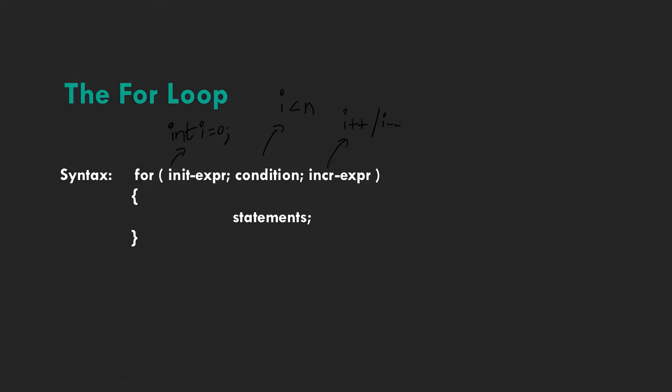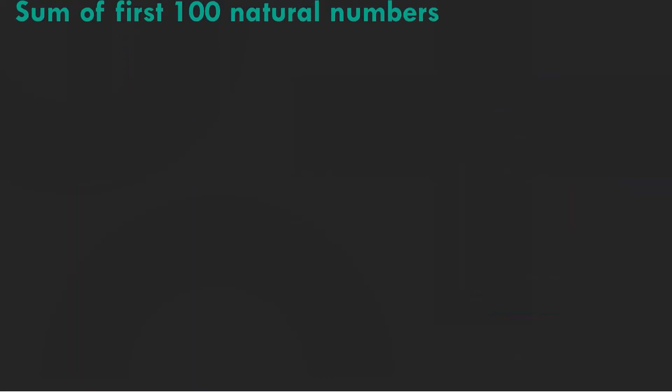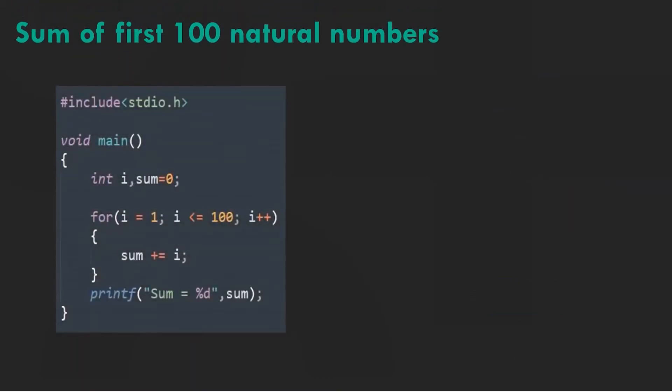Now let's look at a trivial example of the serial for loop. Here's a simple for loop that aims to find the sum of the first hundred natural numbers. In this loop we initiate i as one and sum as zero.